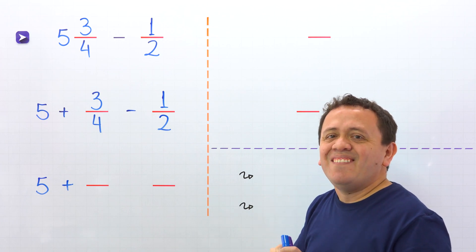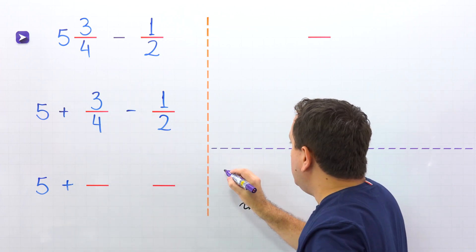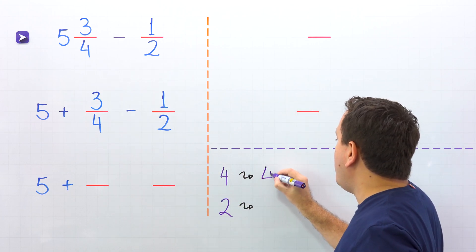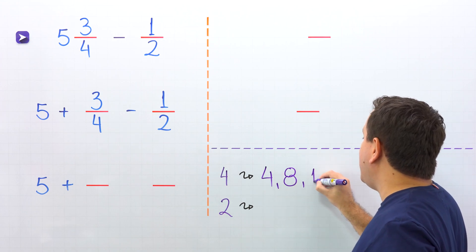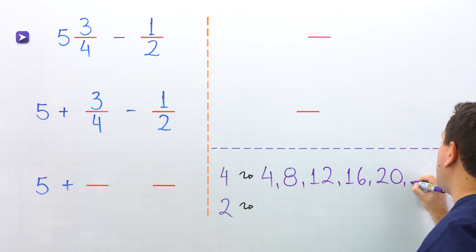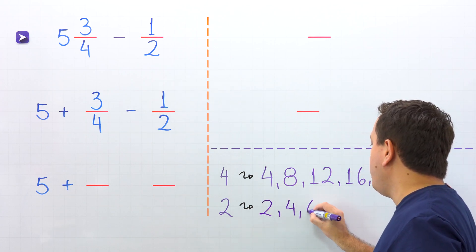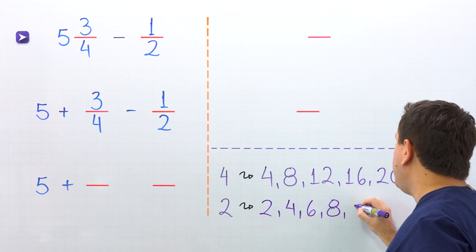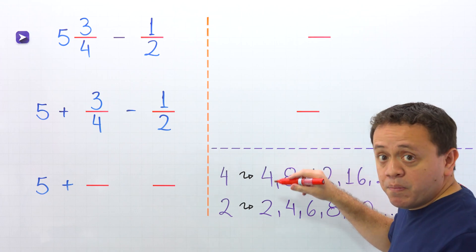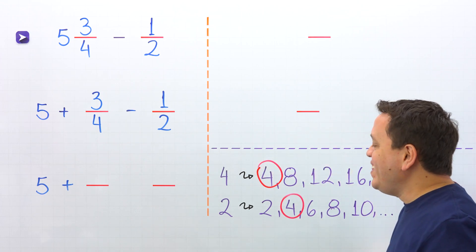The denominators that we have are 4 and 2. The first multiples of 4 are 4, 8, 12, 16, 20, and so on. The first multiples of 2 are 2, 4, 6, 8, 10, and so on. The smallest number that we can find on both lists is 4. Then 4 is the least common denominator.